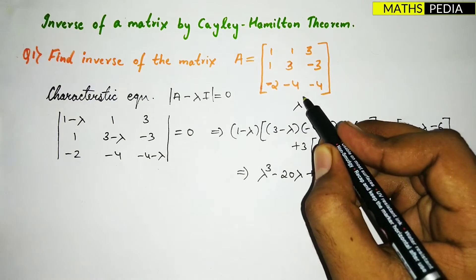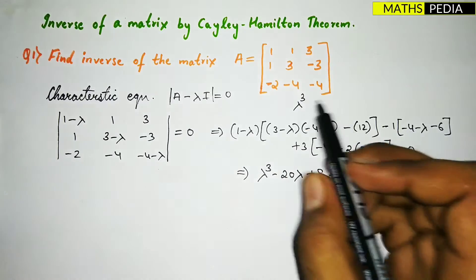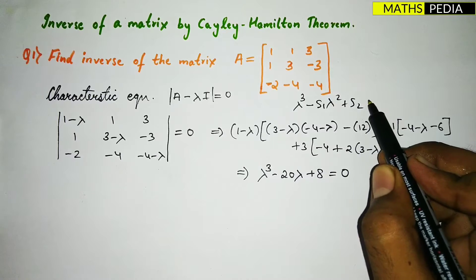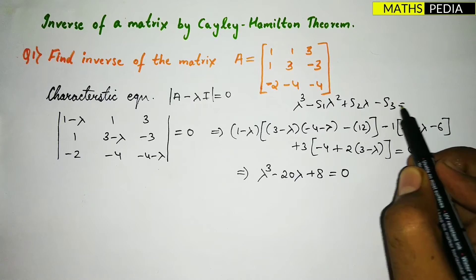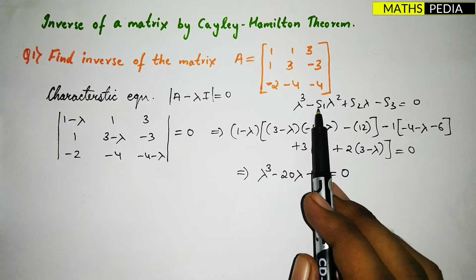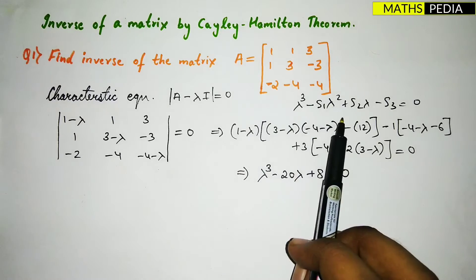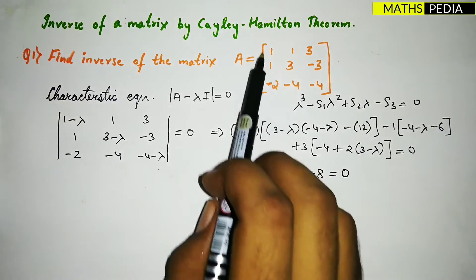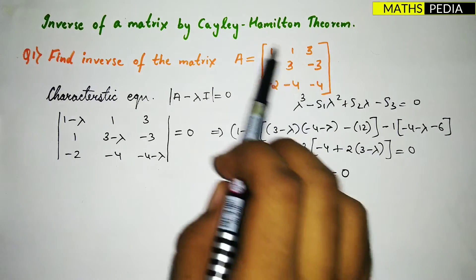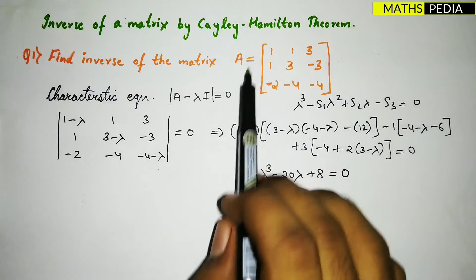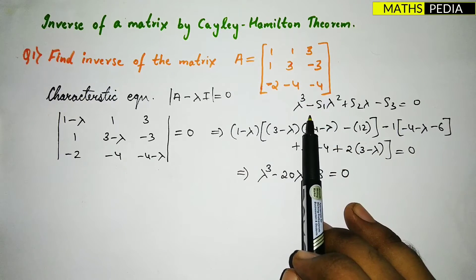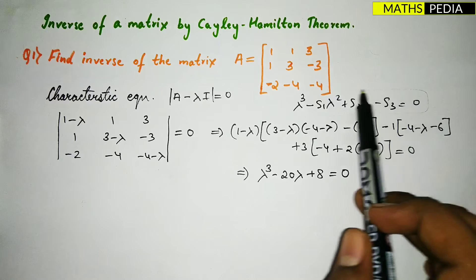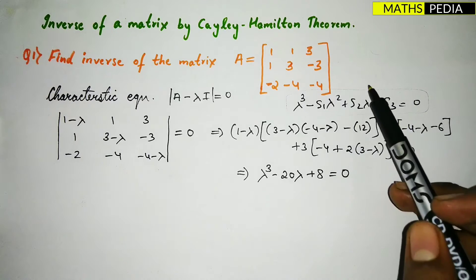Alternatively, you can use the formula: λ³ - S₁λ² + S₂λ - S₃ = 0 for a 3×3 matrix, where S₁ is the sum of the diagonal elements, S₂ is the sum of the cofactors of the diagonal elements, and S₃ is the determinant of the given matrix. Either method can be used to find the characteristic equation.